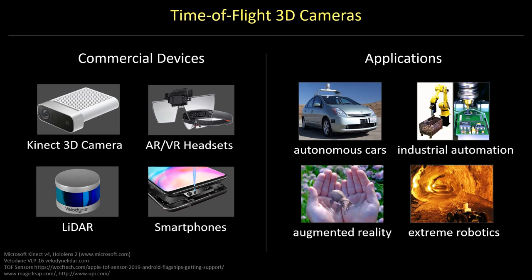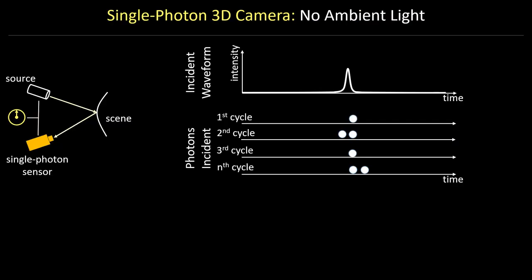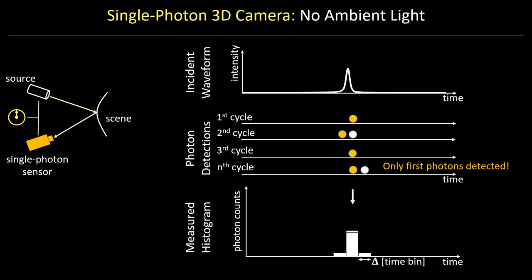Let's look at the single photon image formation model first in a simple scenario. The scene is illuminated only by a laser source that periodically emits a light pulse. The sensor then receives time shifted pulses in the form of photon streams. For each stream, it detects only the first photon. This is the defining property of single photon sensors. Using only the first photon of each pulse, the sensor makes a timing histogram.